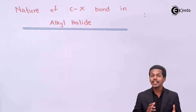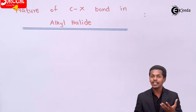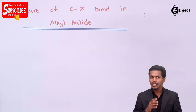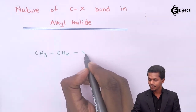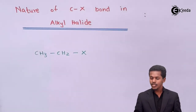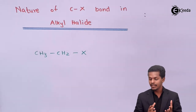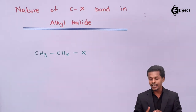Today we are going to talk about the nature of the C-X bond in alkyl halide. This depends on the size of the halogen atom associated with the carbon atom. Alkyl halides are basically compounds which consist of an alkyl group along with a halogen atom.